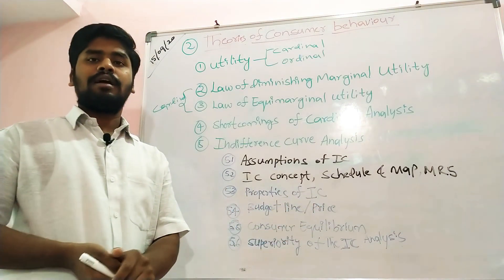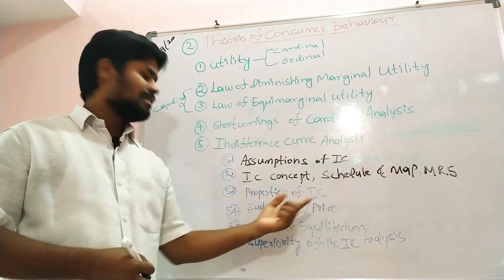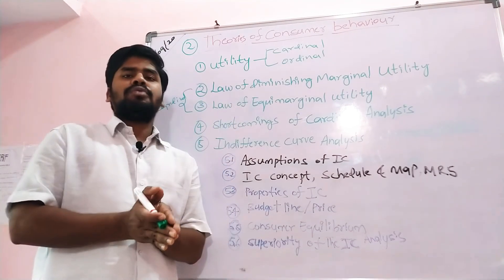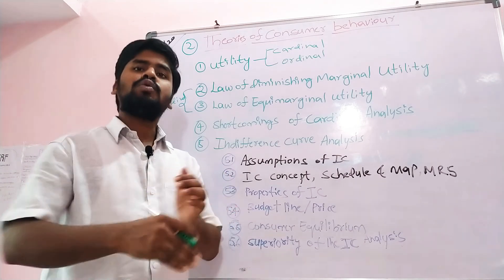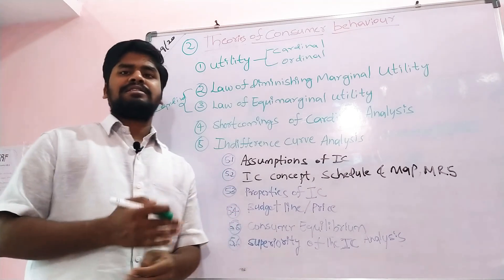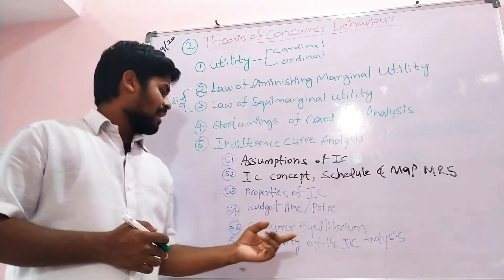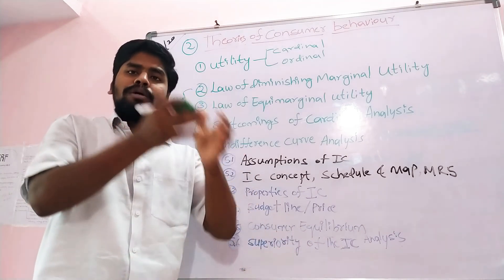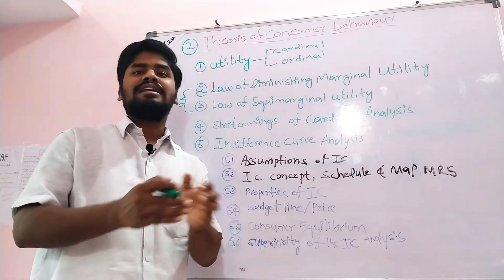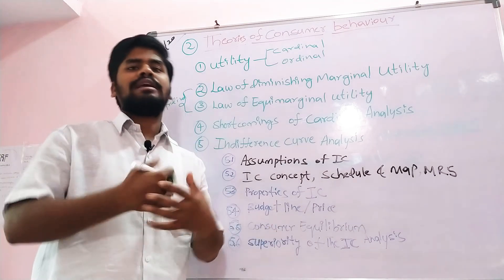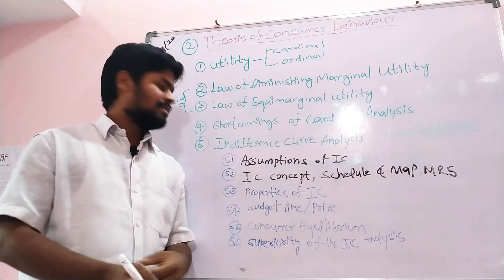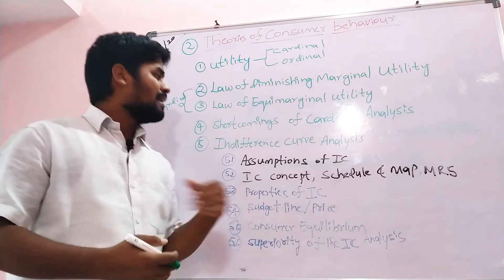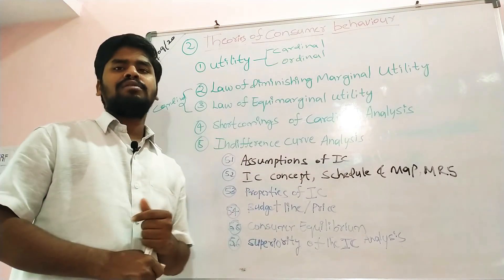We will study the properties of indifference curve, then the budget line — also called the price line — which shows how much income you have and how many goods and services you can purchase with that income. We will also study consumer equilibrium: given a particular amount of budget, how many goods and services can be purchased, and how the consumer reaches equilibrium. Finally, we will study the superiority of indifference curve over cardinal utility analysis.